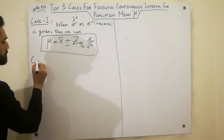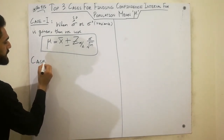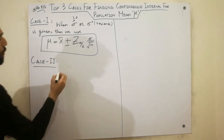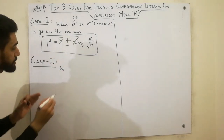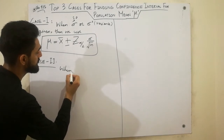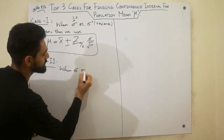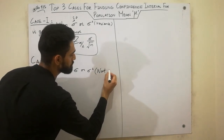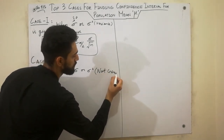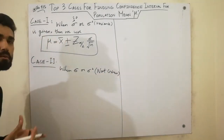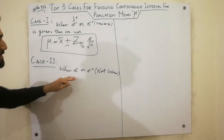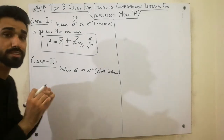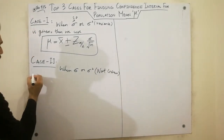Now we move to the second case. The second case is very important: when Sigma or Sigma squared is NOT given. When Sigma or Sigma squared is not given, any problem will be moved to the second case. You will see the condition applies here.